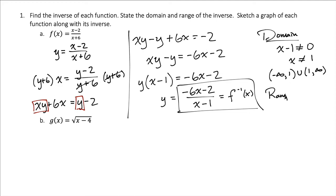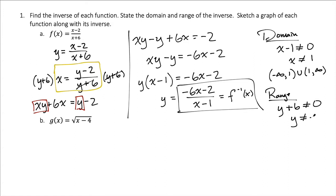We also want the range of the inverse. For the range of this thing, we can go back to our original function, because we know that the range of the inverse is the same as the domain of the function. Looking at this function, we know that x plus 6 cannot equal 0. But remember we switched x to y, so really it's y plus 6 that cannot equal 0 — we see that right here after you switch x and y. So subtracting 6, we get y cannot equal negative 6. Writing that in interval notation: negative infinity to negative 6, union negative 6 to infinity.